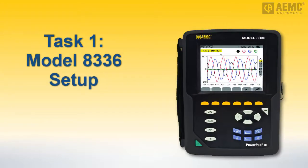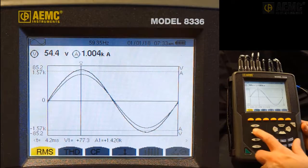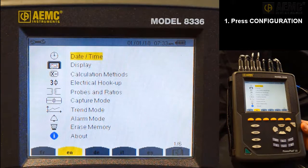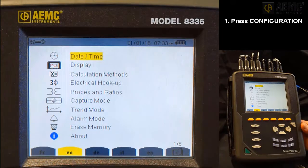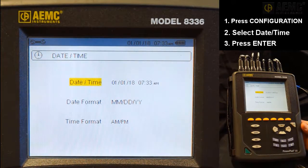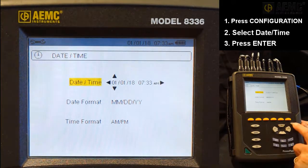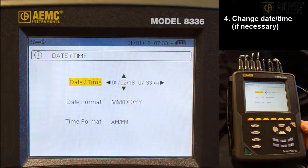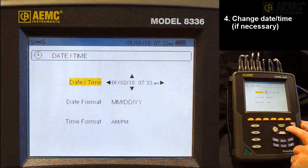Our first task involves setting basic instrument configuration parameters. With the instrument on, press the Configuration button, labeled with a wrench icon, to display the Configuration Options screen. By default, the Date Time option is selected. If not, use the arrow buttons to highlight it. Then press the Enter button to display the Date Time screen. Check the displayed date and time. If it differs from the current date and time, press Enter to select the settings. Then use the arrow buttons to change the date and or time. When finished, press Enter.